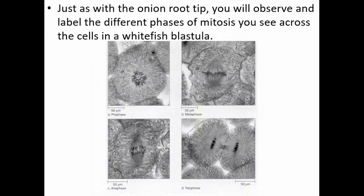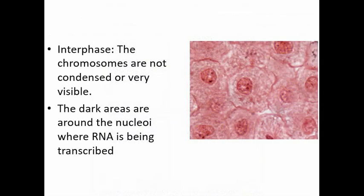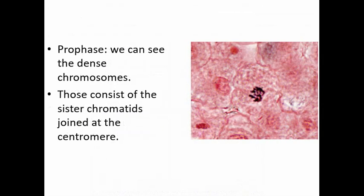Just as with the onion root tip, you'll observe and label the different phases of mitosis you see across the cells in a whitefish blastula. You might see things such as interphase where the chromosomes are not very condensed or very visible. You might see little dark areas that are the nucleoli where the RNA is being transcribed. Then in prophase you can see the dense chromosomes in this picture of a whitefish blastula. Those chromosomes consist of the sister chromatids joined at the centromere.